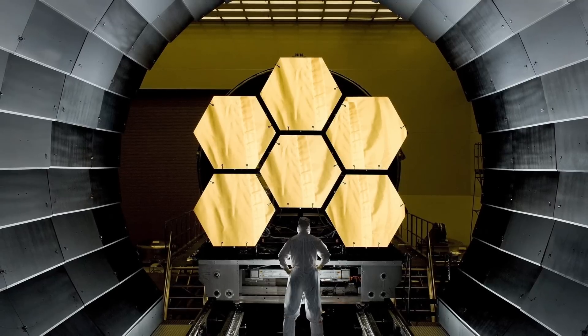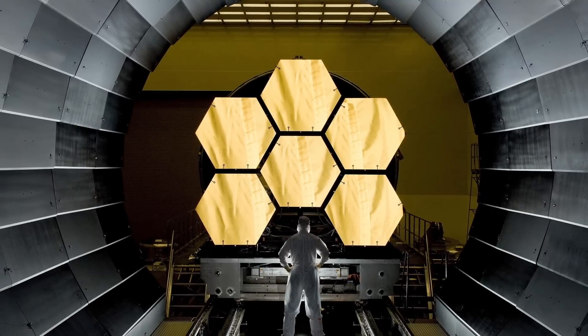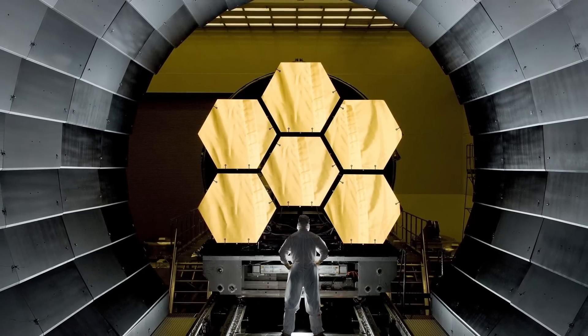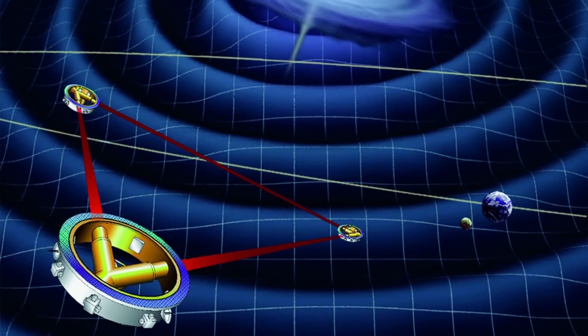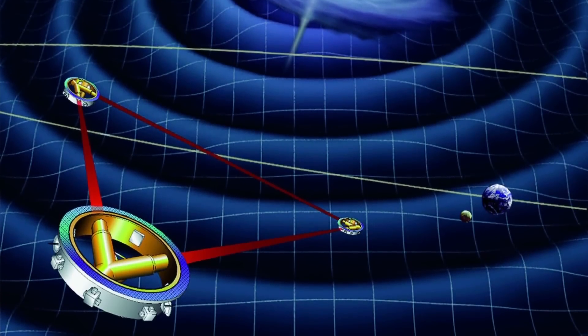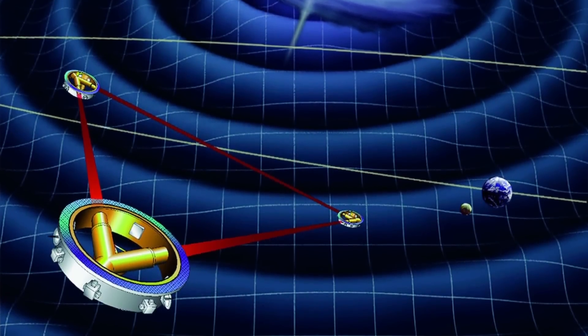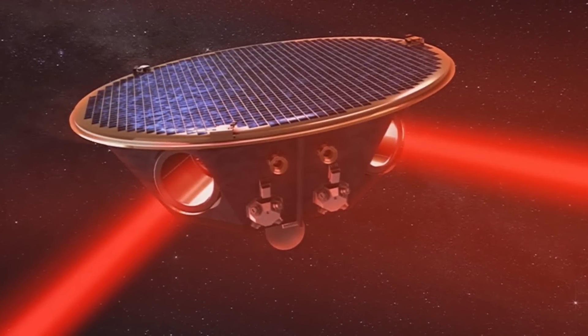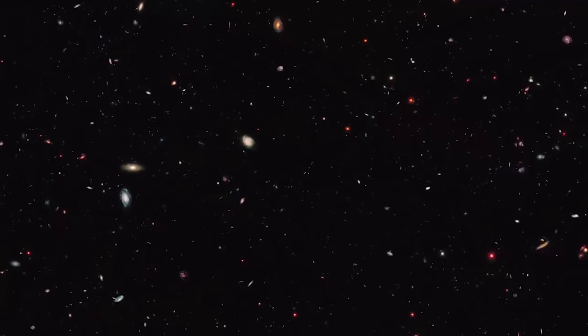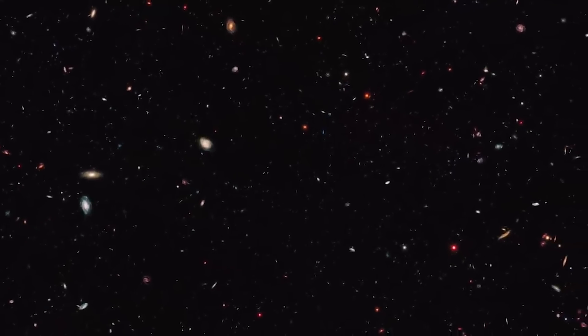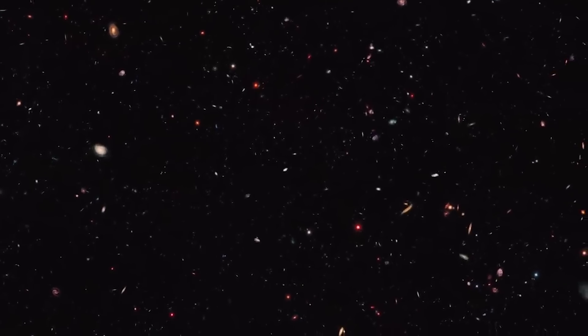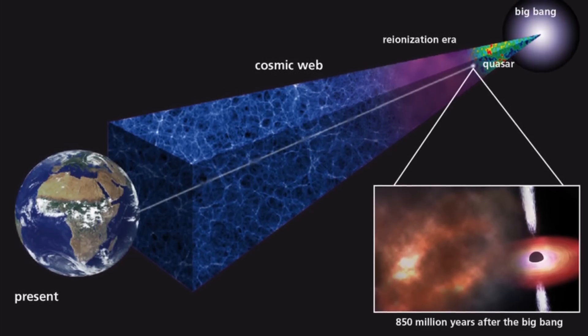They said that the James Webb Space Telescope was created primarily to provide answers regarding the galaxy and star formation processes. The laser interferometer space antenna, also known as LISA, a member of the next generation of gravitational wave detectors, is ready to disclose much more about black holes, even primordial ones if they exist. According to astronomers, the two observations should provide them with enough data when combined